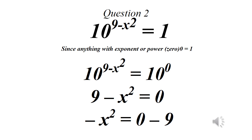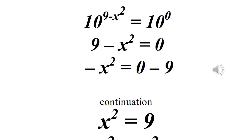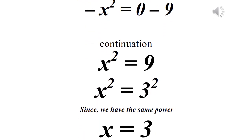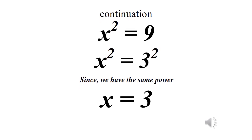Since the bases are equal, we equate the powers: 9 minus x squared equals 0. Separating, we get minus x squared equals negative 9, so x squared equals 9, which is 3 squared. Since we have the same power, x equals 3.